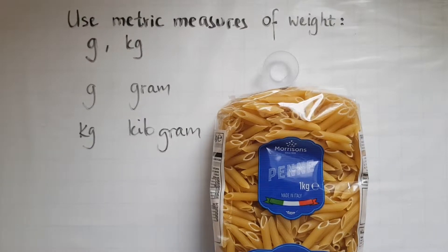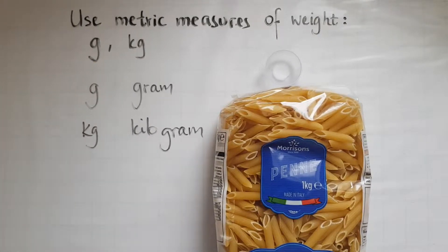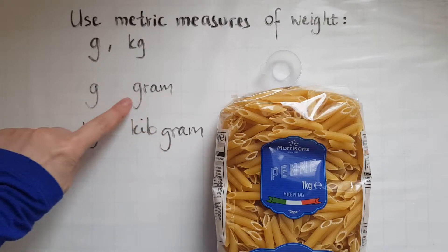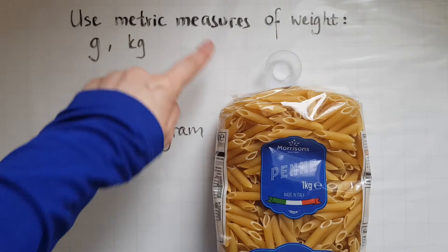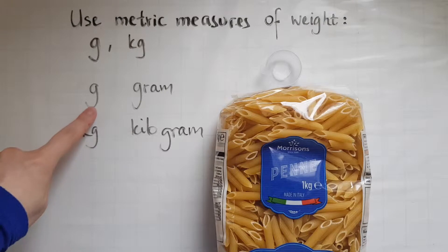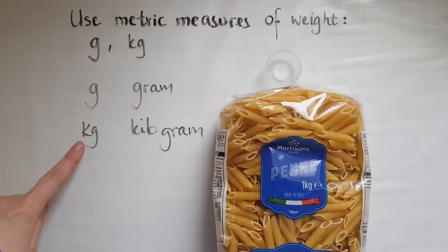In this video we'll learn to use metric measures of weight. We've got grams and kilograms. Just like the other units we looked at, the word gram repeats itself in the metric measures. This is not the same as pounds or stones, which are imperial measures. G stands for gram, and K stands for kilo, so kilogram.